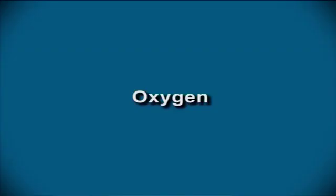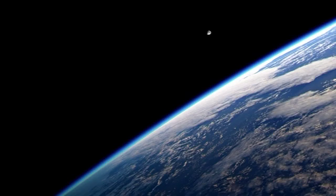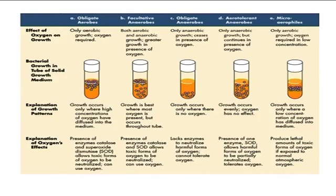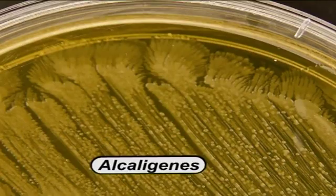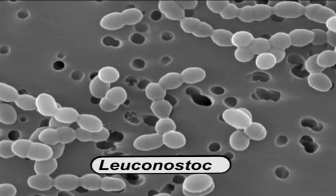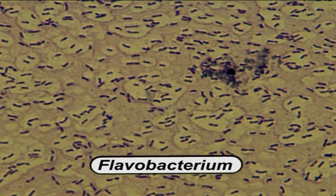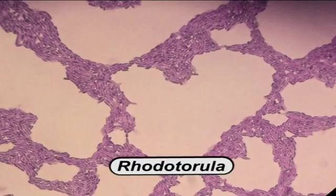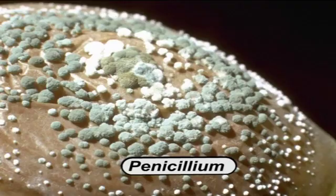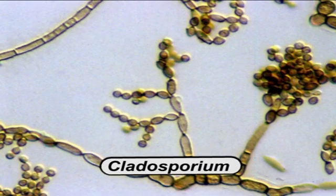Let us know how oxygen affects microorganisms. Earth's atmosphere consists of about 20% oxygen and most life forms are dependent upon it for survival and growth. Various types of oxygen requirements by microbes are given in figure 9. Aerobes are microorganisms which require oxygen for growth. Examples include bacteria such as Alcaligenes, Pseudomonas, Lactobacillus, Leuconostoc, Micrococcus, Bacillus, Serratia, Flavobacterium; among yeasts, Rhodotorula; and among molds, Rhizopus, Aspergillus, Penicillium, Mucor, Cladosporium, and Sporotrichum.